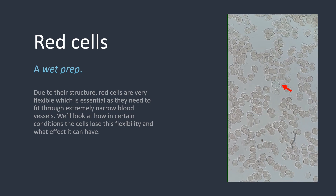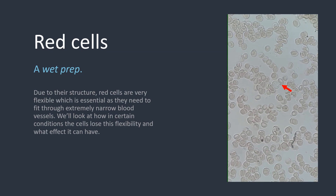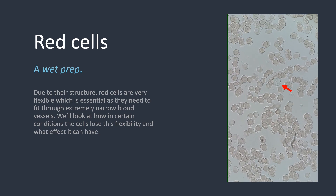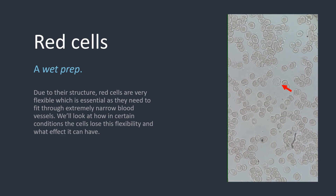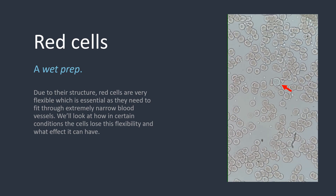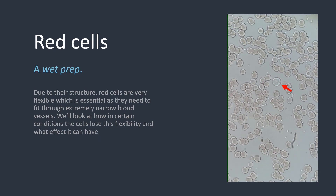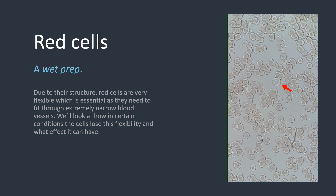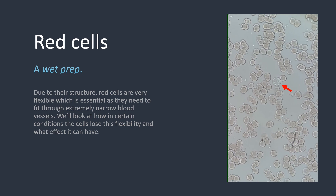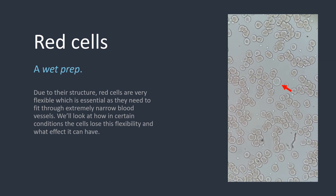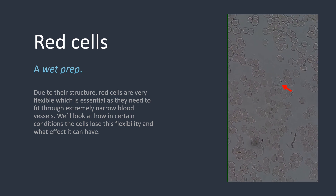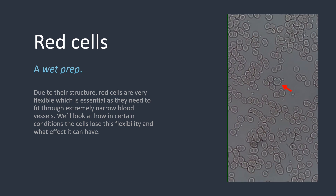Before we start I wanted to show you what red cells look like when they are unfixed and unstained — it'll help you appreciate what they do. The clip on the right hand side is from a wet prep. I added a drop of blood to a glass slide, put a cover slip on top and viewed it under the microscope. Focus on the immobile white cell marked by the red arrow and look at the red cells moving past it. The red cells are extremely flexible, almost like droplets of oil, and they easily glide past the white cell.